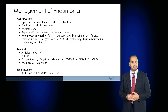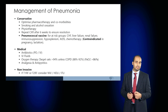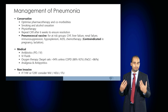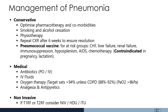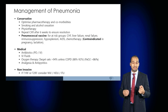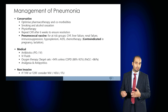To manage pneumonias conservatively, we optimize any other comorbidities. Patients should be encouraged to give up alcohol or smoking, which can improve the immune system. Physiotherapy helps expectoration of mucus, and any consolidation seen on a chest X-ray should be repeated to ensure resolution and make sure it is not something more sinister. Pneumococcal vaccination can be offered to high-risk groups such as those with heart failure, liver failure, renal failure, immunosuppressed or hyposplenic patients, patients with AIDS or on chemotherapy, but not those who are pregnant or lactating.